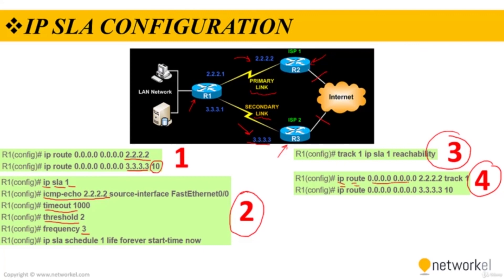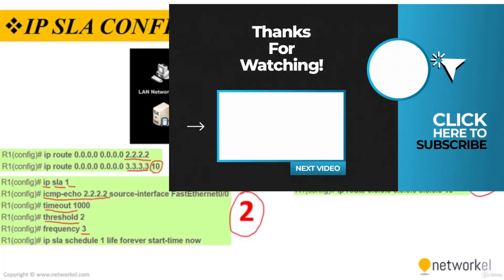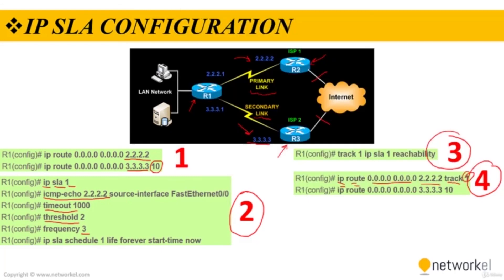The final step in the IP SLA reliable static route configuration is to add the track statement to the default routes pointing to the ISP routers. For example: ip route 0.0.0.0 0.0.0.0 2.2.2.2 track 1. The track keyword specifies that the static route will be installed only if the state of the configured track object is up. Hence, if the track status is down, the secondary route will be used to forward all traffic.